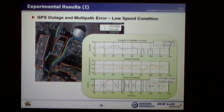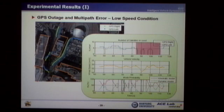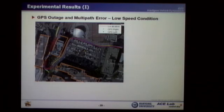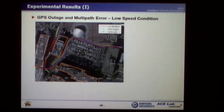This figure shows the number of satellites in use for the GPS receiver, the velocity profile, and the model probability of the interacting multiple model filter. At this region, the GPS receiver loses the GPS signal and therefore does not provide position information. This test was performed under a low-speed driving condition, where the kinematic model probability is dominant. By applying the interacting multiple model filter algorithm, we can obtain continuous and accurate position information.